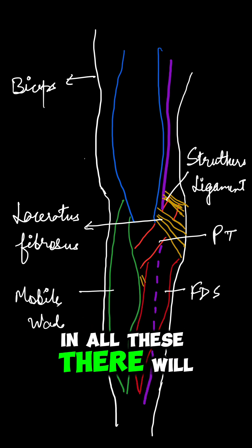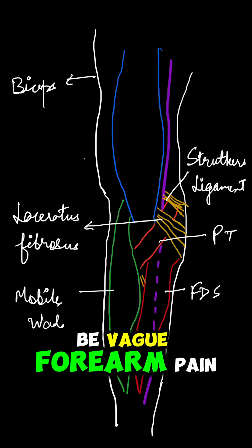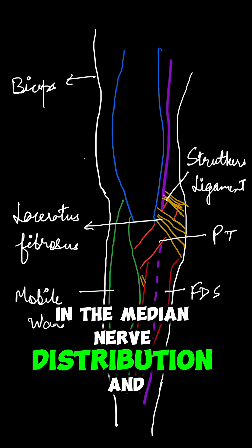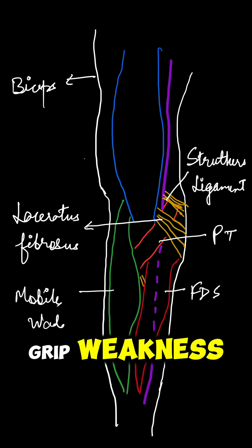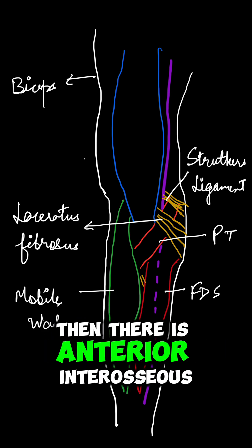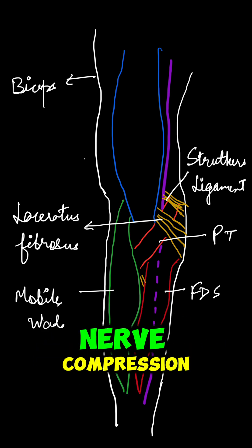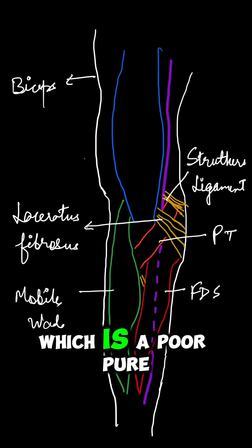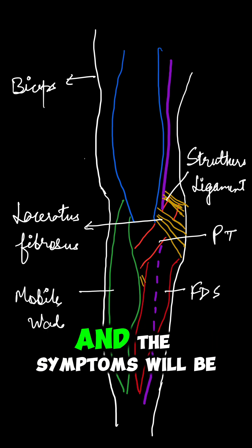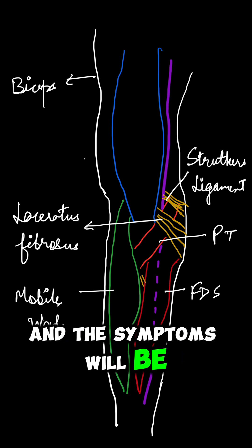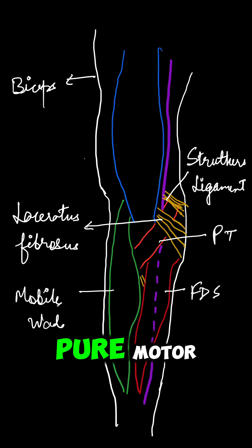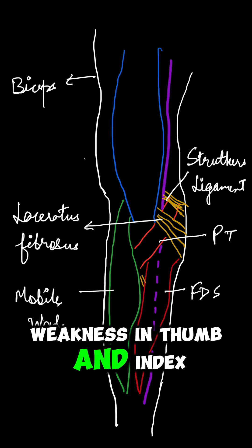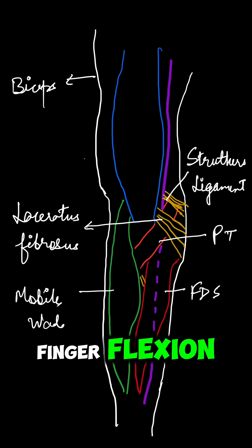In all these, there will be vague forearm pain, paresthesia in the median nerve distribution, and grip weakness. Then there is anterior interosseous nerve compression, which is a pure motor branch, and the symptoms will be pure motor weakness in thumb and index finger flexion.